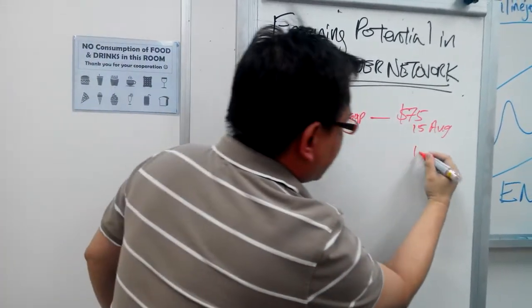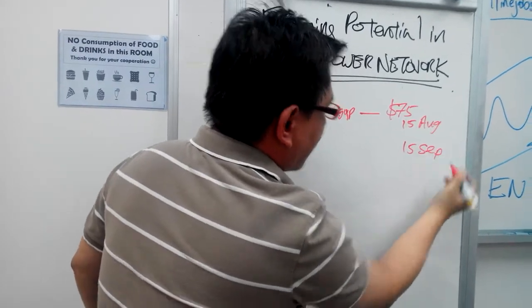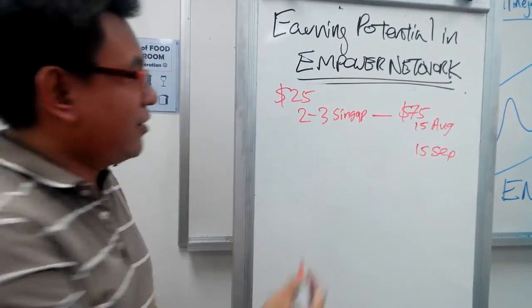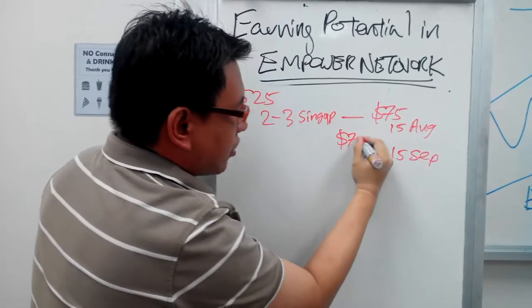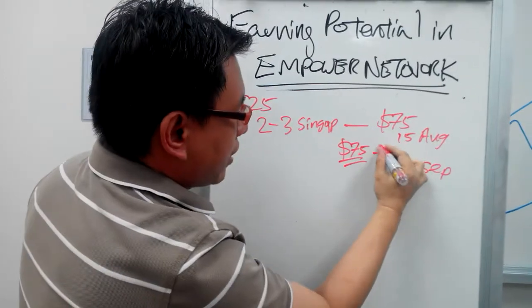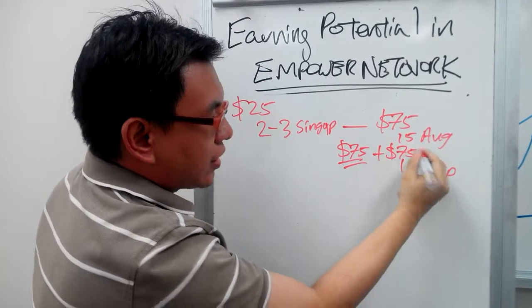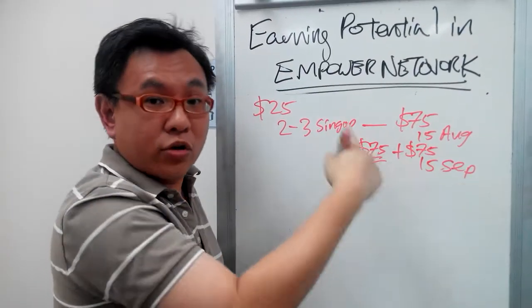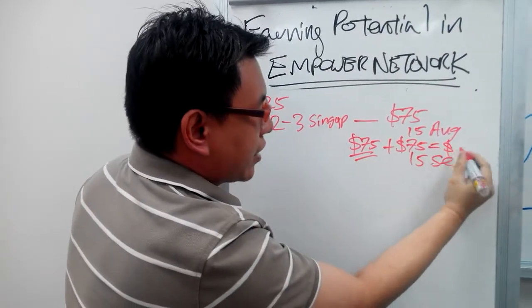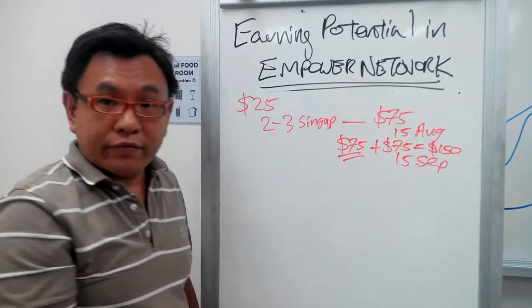Let's say for example, 15th of September comes and you do the same thing again, you would have made $75 for September and also including $75 that you made from August, which is cumulative. So that will give you an earning potential of $150 for September.